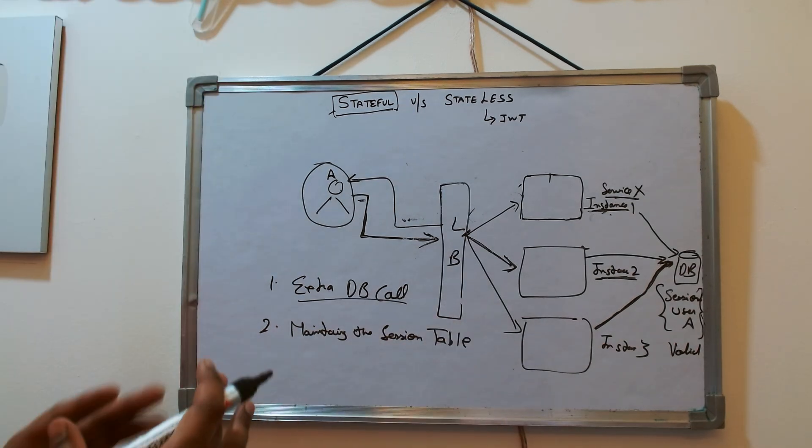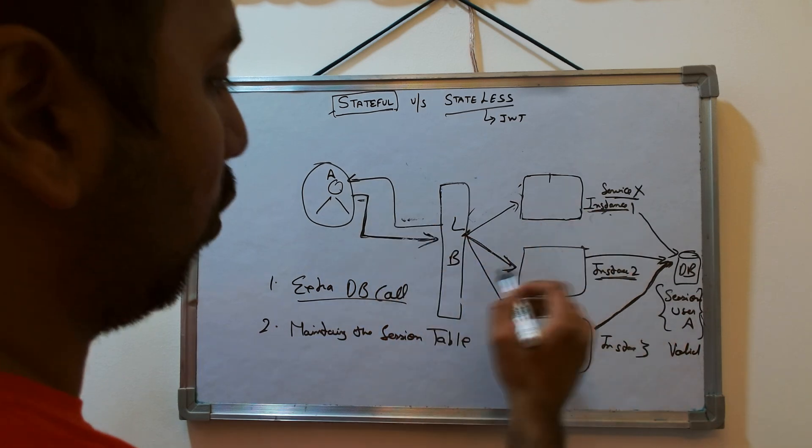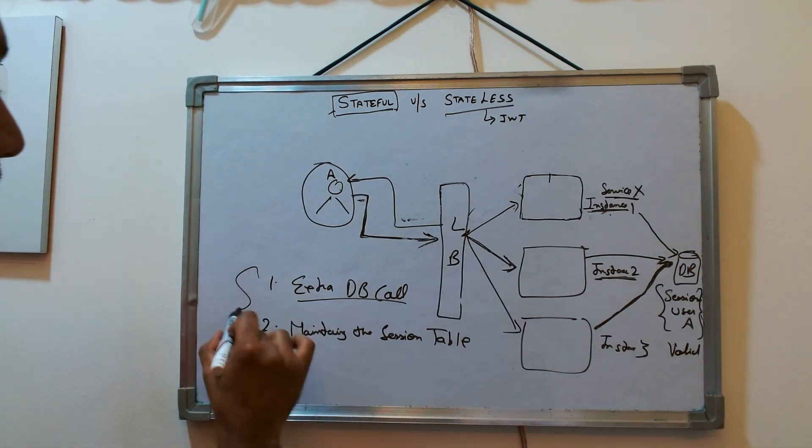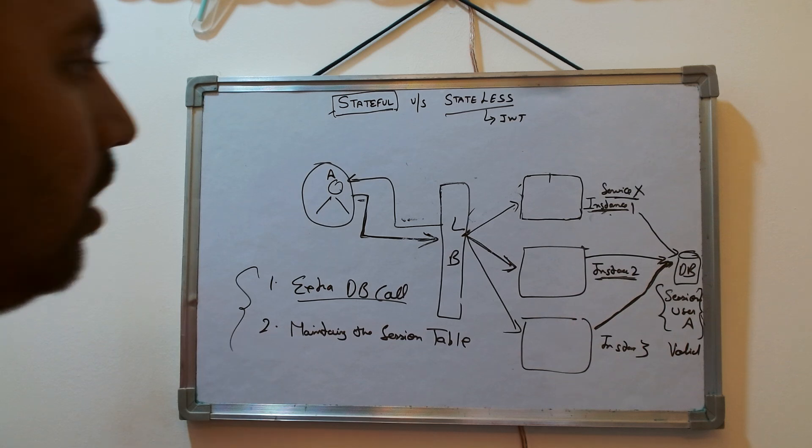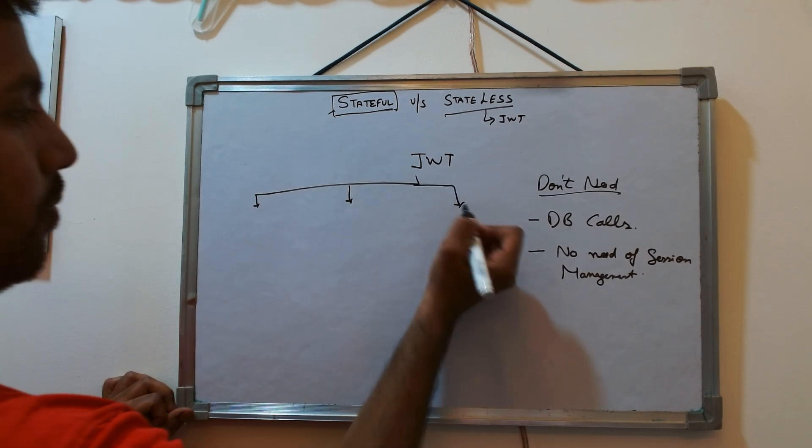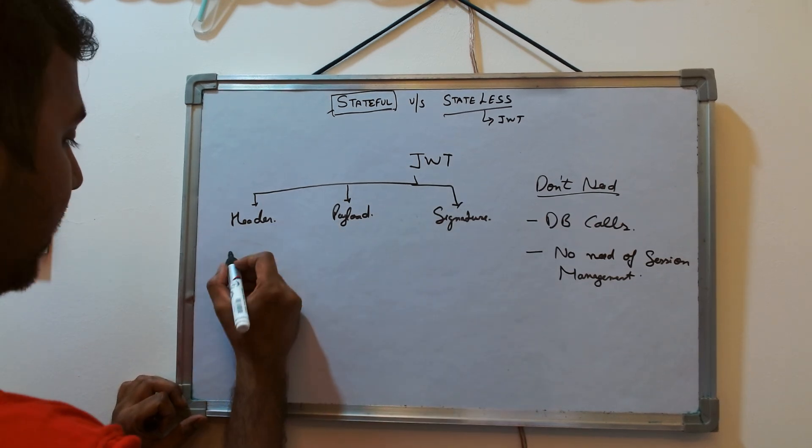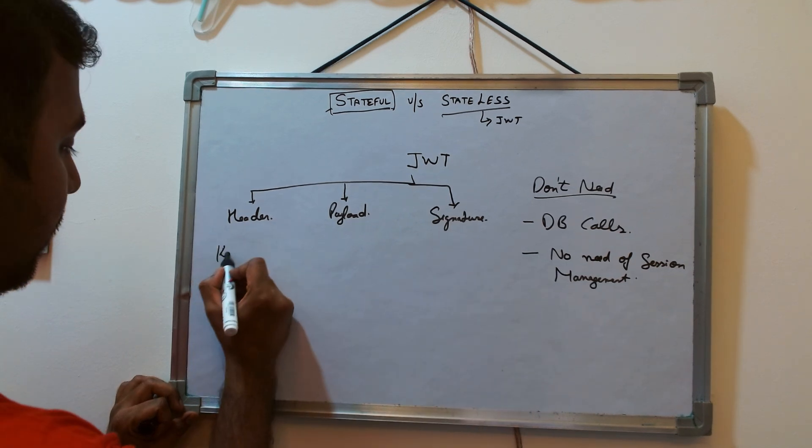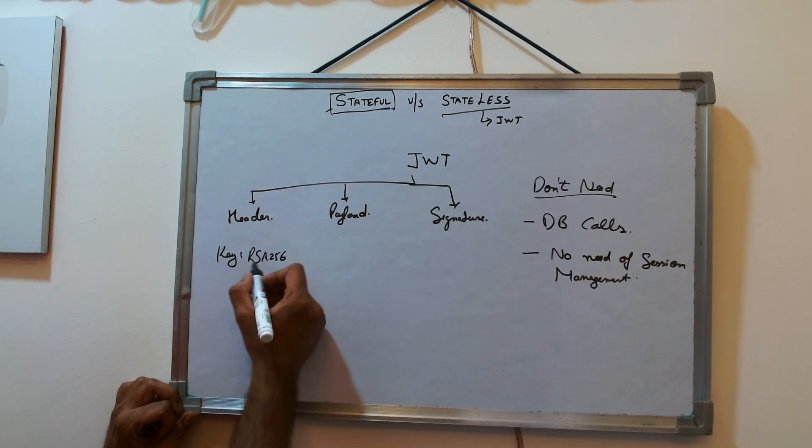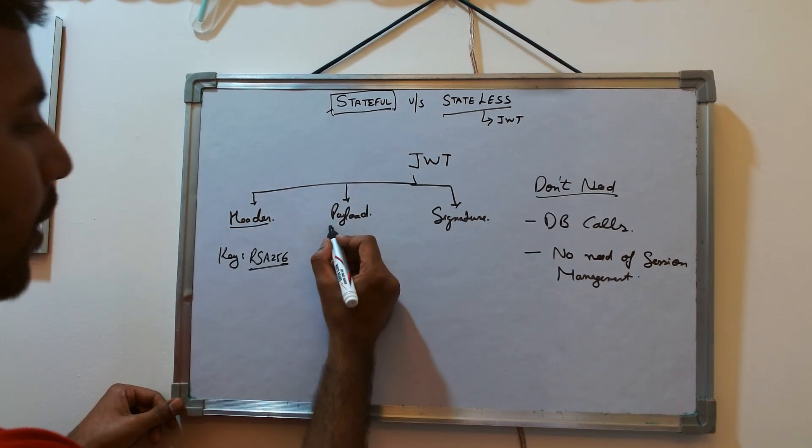So now you have made your architecture to stateless like request can go to any one of the servers, but this has these two major issues. Now that's where the next comes is like JWT. So in case of JWT it has three parts. JWT has three parts: header, payload, signature. So header contains information about what is the key. Let's say it says that RSA 256, this is the key I am using for the signature. So header includes this information. Payload is like...